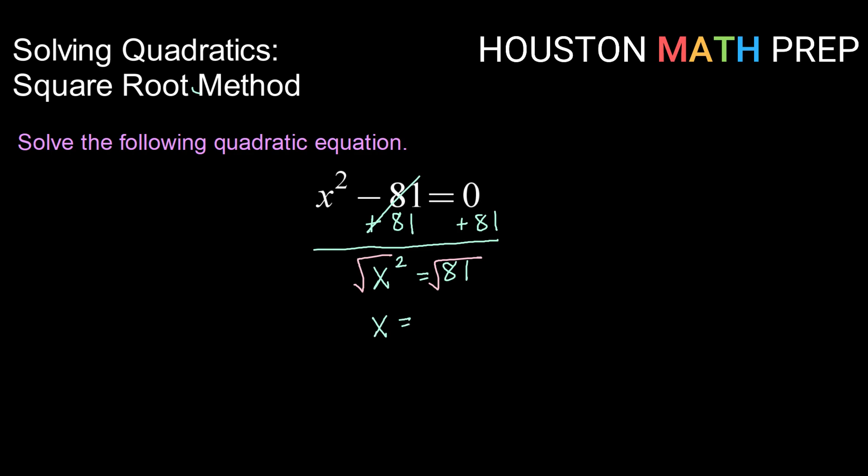Whenever I solve an equation by taking the square root of both sides, I need to consider both the positive and the negative versions of the answer. Square root of 81 is 9. Let's take a look at why we might need to consider both the positive and the negative 9.